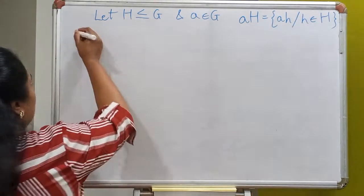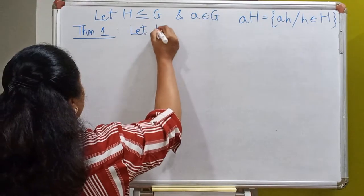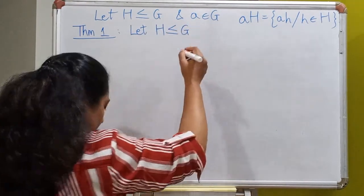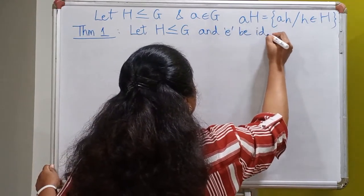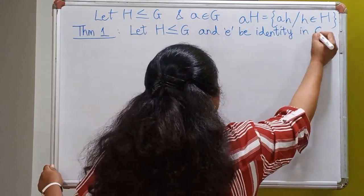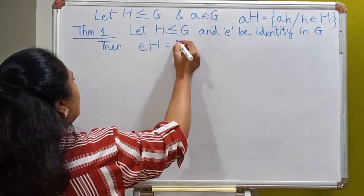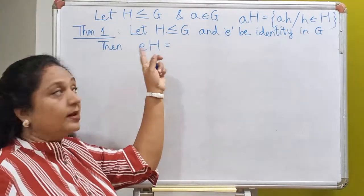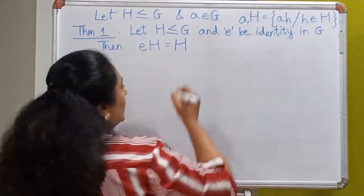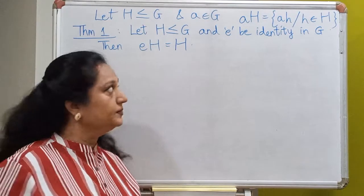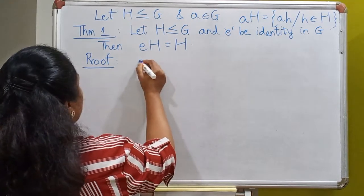With this definition in mind, let's prove a few properties. The first one we are going to prove is: let H be a subgroup of a group G and E be the identity in G. Then, if we multiply every element in the subgroup from the left by the identity — that means we look at the left coset EH — then it will be the same as the subgroup H. That's easy to prove; look at the definition of EH.